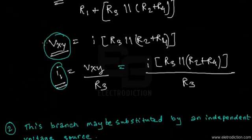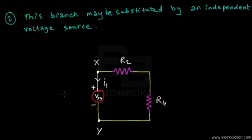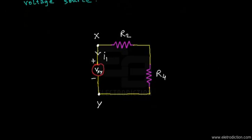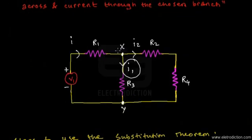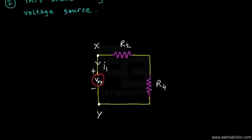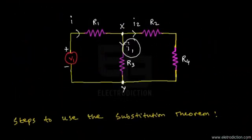We now entirely substitute this network using the value of VXY and branch current I1 flowing through branch XY. The resulting reduced network shows that all circuit elements connected across terminals X and Y to the left — including resistance R3 — are removed and replaced with a single voltage source VXY, carrying current I1 through it.